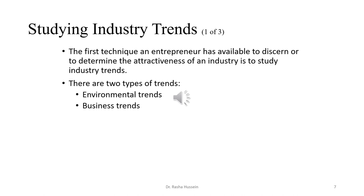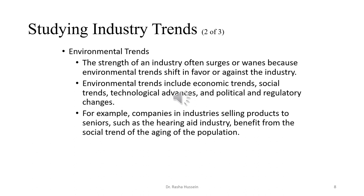The first technique for determining the attractiveness of an industry is to study industry trends. There are two types: environmental trends and business trends. Environmental trends play a significant role in industry strength — they either strengthen the industry if they shift in its favor, or weaken it if they go against it. Common environmental trends include economic trends, social trends, technological trends, and political and regulatory changes. For example, companies selling products to seniors, such as the hearing aid industry, benefit from the social trend of an aging population.